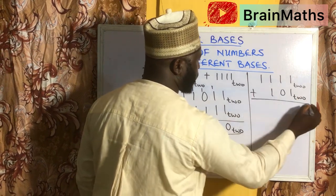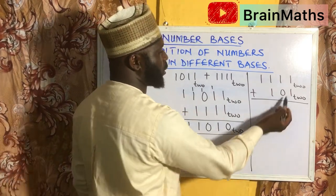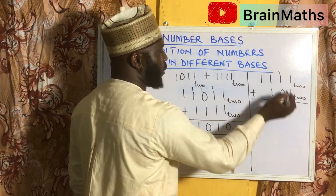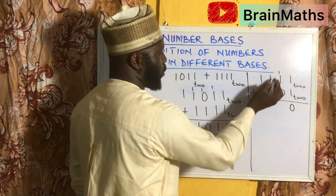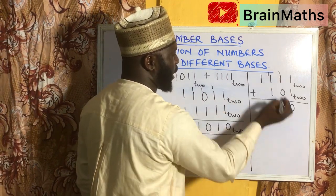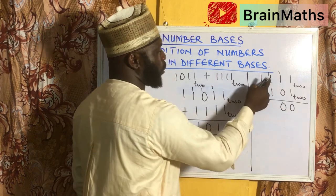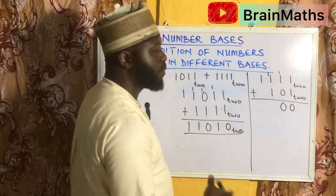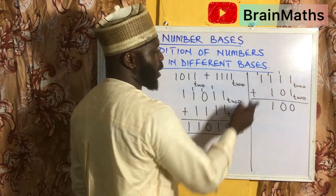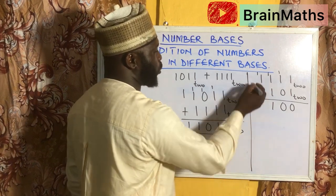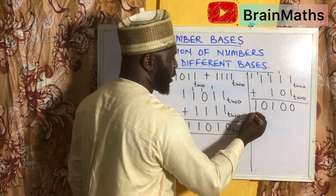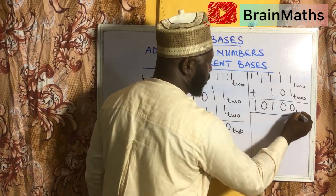Continuing in base 2: 1 plus 1 is 2, how many 2s in 2? That is 1 remainder 0. 1 plus 1 again gives 2, how many 2s in 2? 1 remainder 0. Then 1 plus 1 plus 1 gives 3, how many 2s in 3? 1 remainder 1. Finally, 1 plus 1 is 2, how many 2s in 2? 1 remainder 0. The last digit is noted as 1, all in base 2.